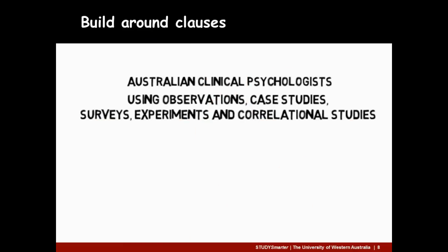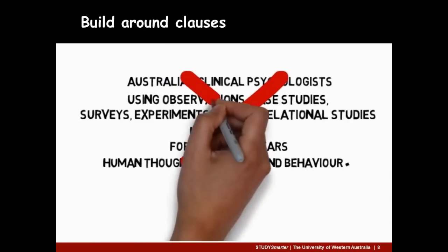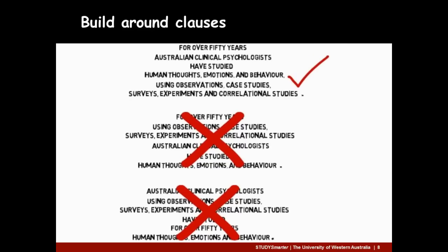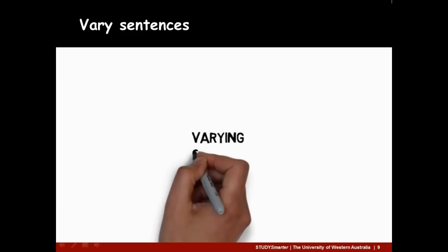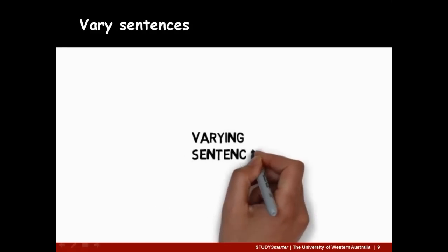Putting a lot of extra information in the middle can make sentences difficult to read. So to maintain clarity in long sentences, keep subjects, verbs and objects close together and avoid overloading the beginning or the middle of sentences. As we've seen, clear sentences don't have to be short. In fact, variety in sentence length and structure aids clarity.